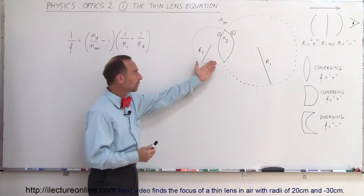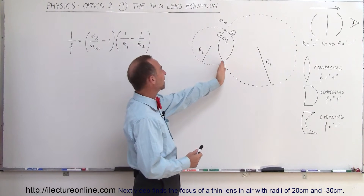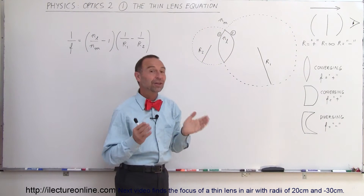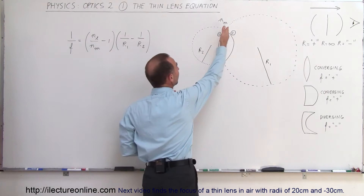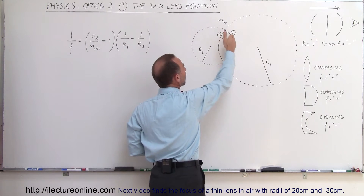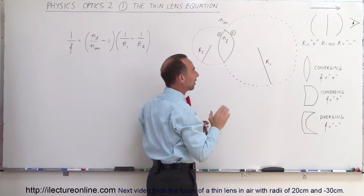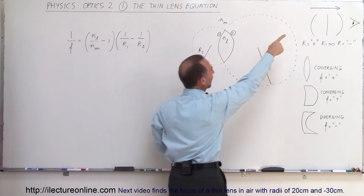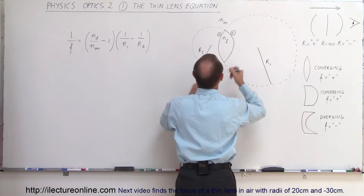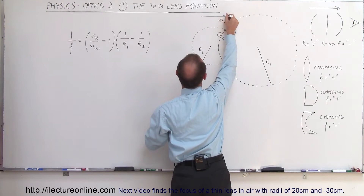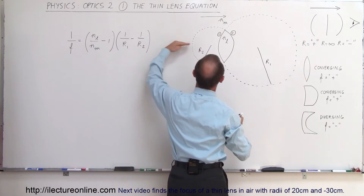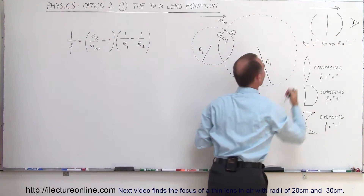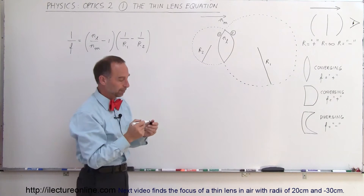Here we have a typical thin lens. Notice that the curvature of the two sides of the lens are different from one another. This is the front side of the lens and this is the back side. Typically the convention is that we go from left to right, so we expect the rays to go through the lens from left to right and the observer to be on the right side of the lens — that's simply by convention.